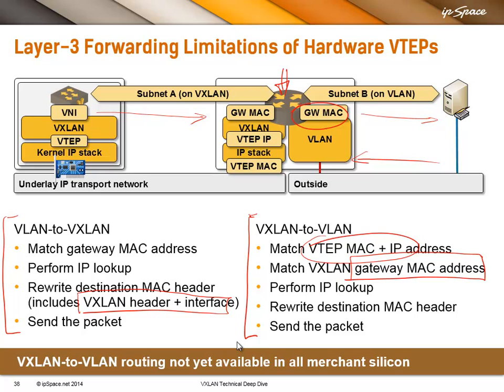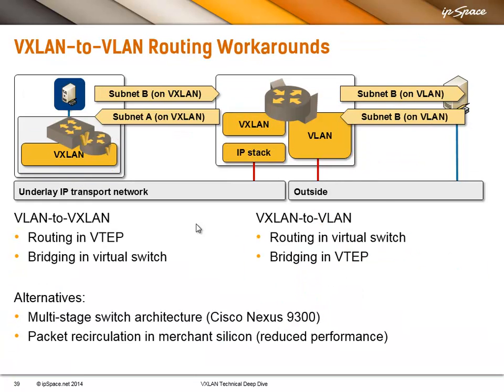Cisco solved this problem on the Nexus 9300 by adding its own ASIC to handle this processing. Nuage solved it by recirculating the packet. So there are two ways to solve that problem.